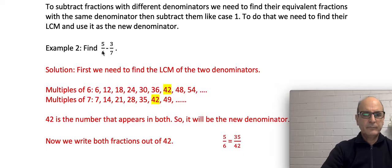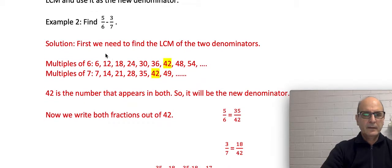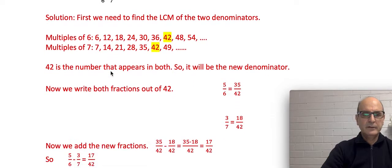Let's look at an example: find 5/6 minus 3/7. As you can see, we have different denominators — one is 6 and one is 7. Our first step is to find a common denominator, which will be the lowest common multiple of 6 and 7.